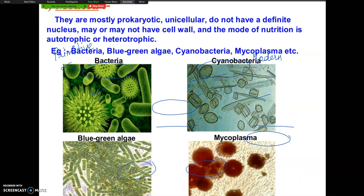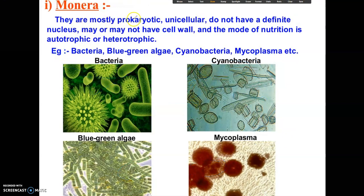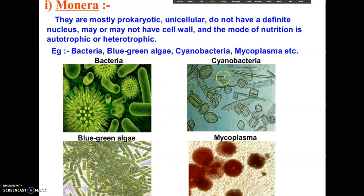Kingdom Monera: they are mostly prokaryotic, unicellular, and do not have a definite nucleus. They may or may not have cell walls, and their mode of nutrition may be autotrophic or heterotrophic. Examples you can see in this figure include bacteria, blue-green algae, cyanobacteria, and mycoplasma.